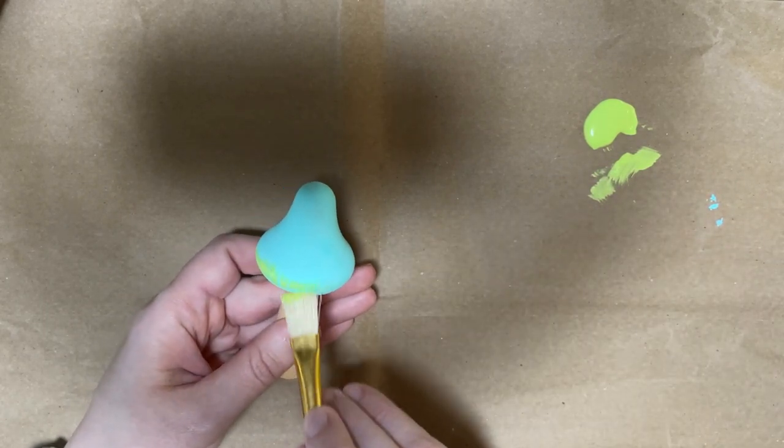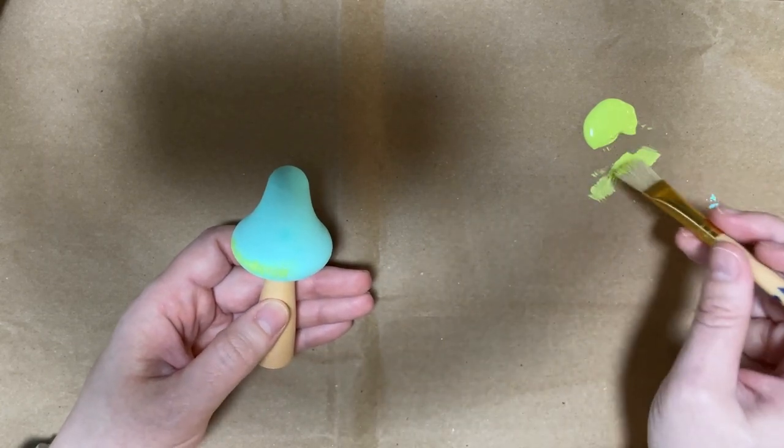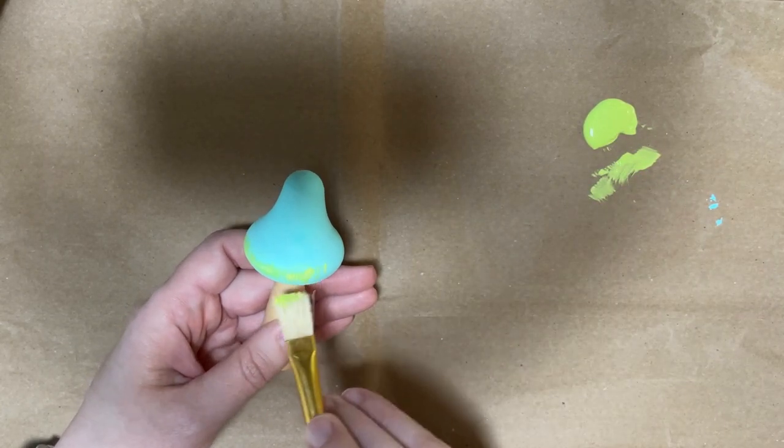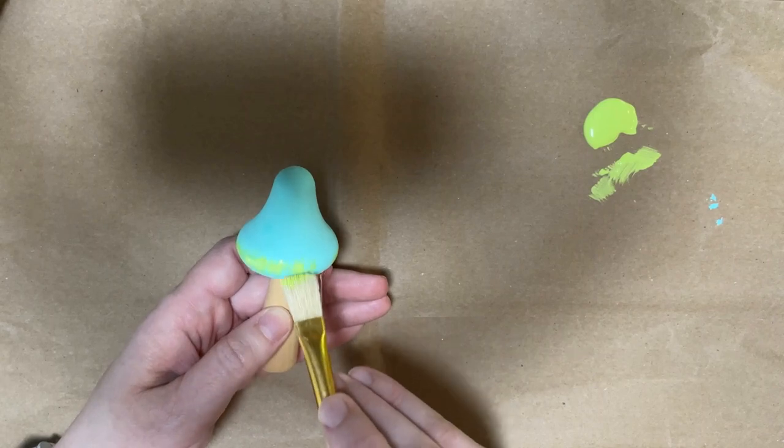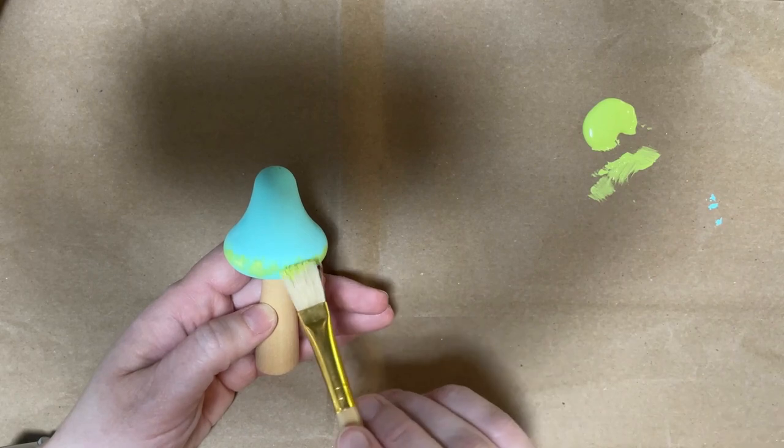Provided that that is, like this, a paper bag, that will let you get wispy, not really solid lines when you're painting. So it will look like this mushroom just has like a faint hint of green along the bottom, like a blush, as opposed to a harsh line.